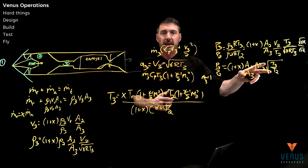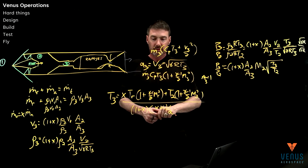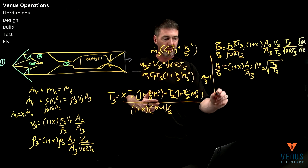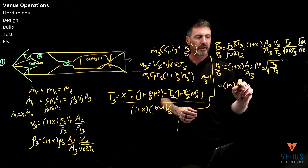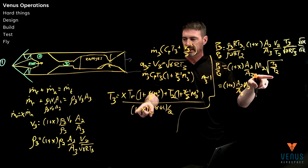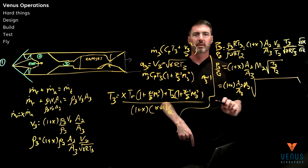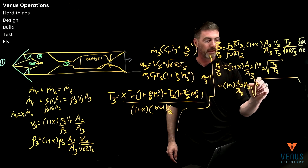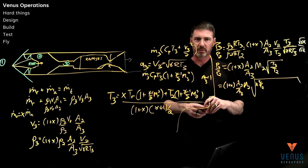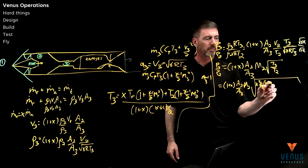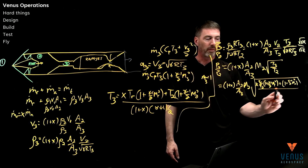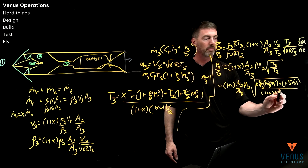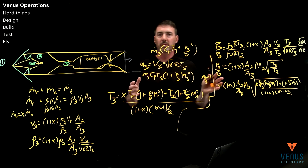I'm going to fill in T3 so you can see what variables are really driving this — it might be a little messy but we'll see in the end. So: (1 plus x), area ratios, Mach number, and T2 falls out of this. This is the square root of: x times (TR over T2) — the ratio of rocket temperature to T2, which is going to be much hotter — times (1 plus (gamma minus 1) over 2 times M_rocket squared), plus (1 plus (gamma minus 1) over 2 times M2 squared), all divided by (1 plus x) times (gamma plus 1) over 2.